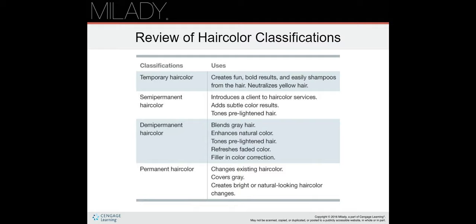Demi-permanent can blend gray hair — it won't cover it 100% but it blends it. It can enhance natural color, tone pre-lightened hair, refresh faded color, and be used as a filler in color correction. Permanent hair color changes existing hair color, covers gray including 100% gray hair, and creates bright or natural-looking results. Permanent is the strongest and temporary is the weakest.